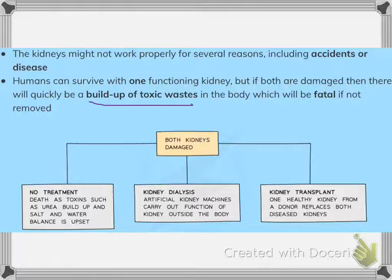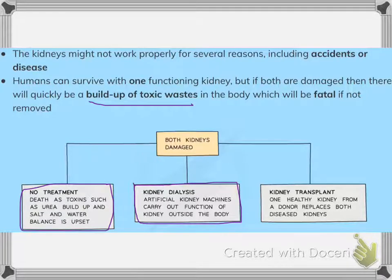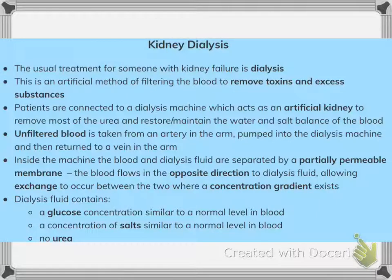This buildup will be fatal if not removed. If both kidneys are damaged and there is no treatment, this would lead to death because toxins like urea will build up and the salt and water balance will be disturbed. To prevent this, kidney dialysis can be used — artificial kidney machines carry out the function of a kidney outside the body. A kidney transplant is when one healthy kidney from a donor replaces both diseased kidneys.